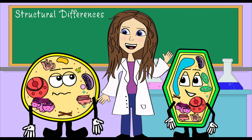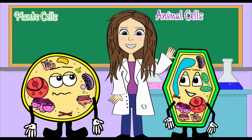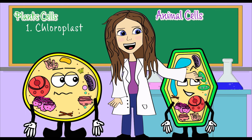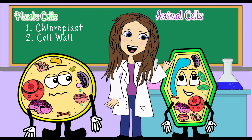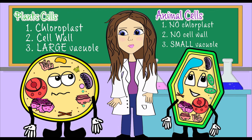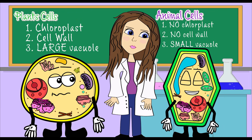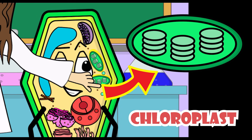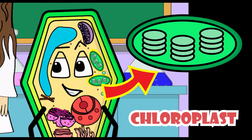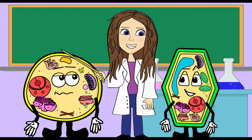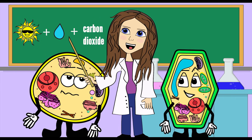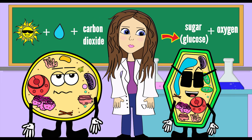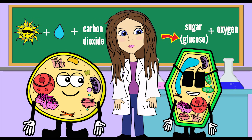Now let's talk about the main structural differences in plant cells versus animal cells. PC, you have chloroplasts, you have a cell wall, and you have a large vacuole — AC does not have these things. This organelle, the chloroplast, is where photosynthesis takes place. It allows you to take sunlight, water, and carbon dioxide and turn it into sugar like glucose and oxygen. Nature keeps providing — I just keep photosynthesizing!